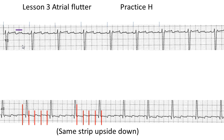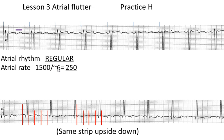Now let's go back up to our strip up here. The flutter wave is going to be about six little boxes apart. I also marked out one-second boxes here, and I counted 24 of these flutter waves in there, which gives me a heart rate for the atria of about 240. So it's about six little boxes apart, giving roughly 250 beats per minute.